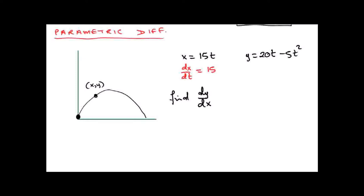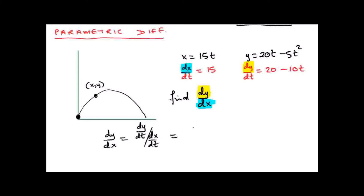What about dy dt? That's 20 minus 10t. Now look — in dy dx, y is on top and x is on the bottom. So our formula is: dy dx equals dy dt divided by dx dt. Very simply, it's 20 minus 10t divided by 15. Something divides into 20, 10, and 15 — that's 5. So that's 4 minus 2t divided by 3, or equivalently 4 over 3 minus 2 over 3 t.